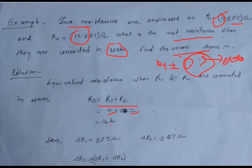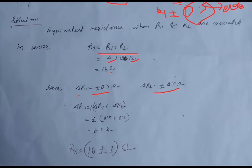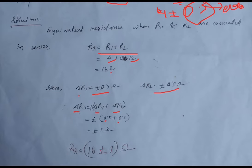The value of del R1 is 0.5 ohm and del R2 is 0.5 ohm. In summation or subtraction, del Rs equals plus-minus (del R1 plus del R2). So del Rs equals 0.5 plus 0.5 equals 1 ohm. Therefore the total equivalent resistance is 16 plus-minus 1 ohm.